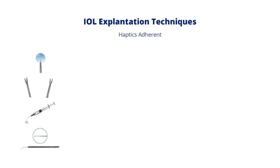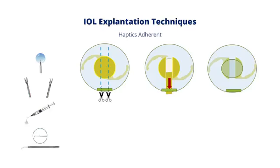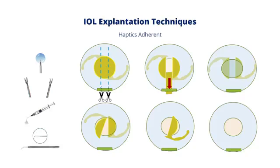In the case where you find the lens is rather adherent and you're not able to completely free up the haptics, do not panic. Once you inject viscoelastic under the optic, bring it forward in front of the capsulorhexis, then cut across into three pieces and remove the centre piece of the optic. Once you've done that, you'll realise there is a lot more space to manoeuvre the remnant parts of the intraocular lens. You can then take your time to use viscoelastic or forceps to dissect free the haptic without stressing the capsular rim and the zonules, and step by step remove the other pieces.